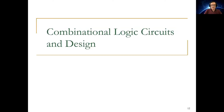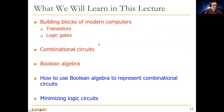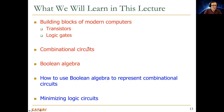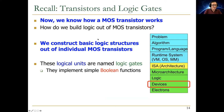Last time we started combinational logic circuits and design. We covered transistors and built logic gates on top of them, and started building combinational circuits. We talked a lot about boolean algebra. Today we're going to talk about how to use boolean algebra to represent combinational circuits, minimizing logic circuits, and combinational building blocks of modern systems. The slides up to about slide 27 are review, so I'll breeze through them.